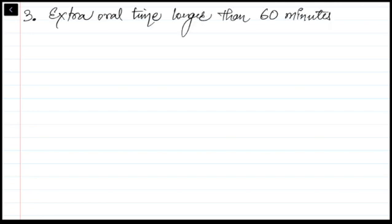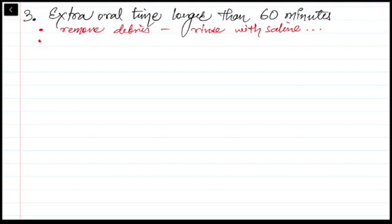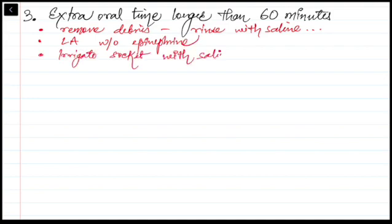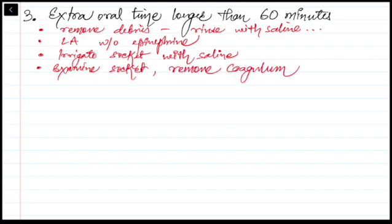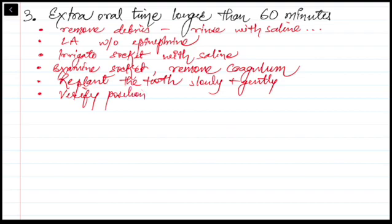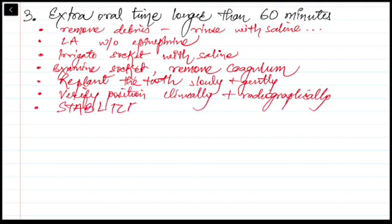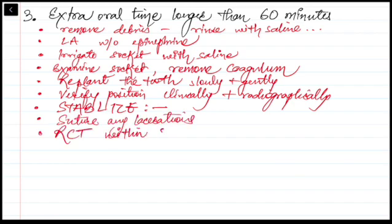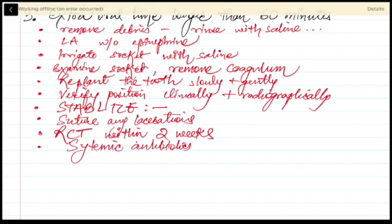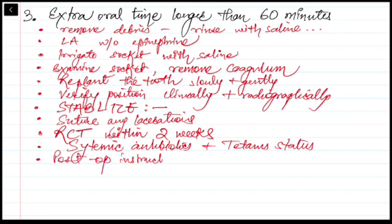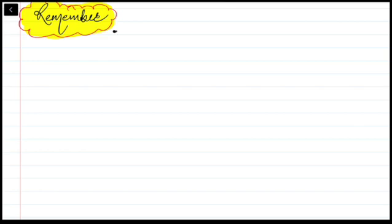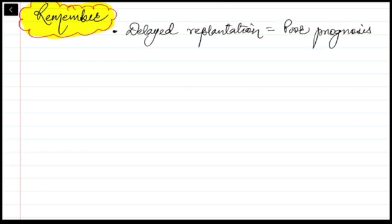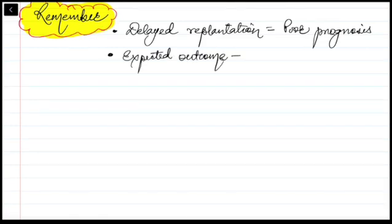When extra-oral time is longer than 60 minutes and the patient did not use any storage media, the protocol is: remove debris, rinse with saline, give local anesthesia without epinephrine, irrigate the socket with saline, examine the socket for fractures, remove any coagulum, then replant slowly and gently. Verify position clinically and radiographically, stabilize with flexible splint for two weeks, suture lacerations, initiate RCT within two weeks, administer systemic antibiotics, check tetanus, provide post-op instructions, and follow up.